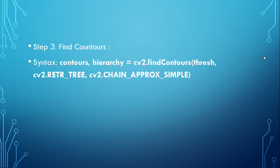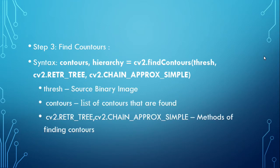Step 3 is the function for finding contours. Syntax: contours, hierarchy = cv2.findContours(thresh, cv2.RETR_TREE, cv2.CHAIN_APPROX_SIMPLE). Here thresh is the binary image, contours is the list of contours found, and cv2.RETR_TREE along with cv2.CHAIN_APPROX_SIMPLE are the methods used for retrieving and approximating the contours.